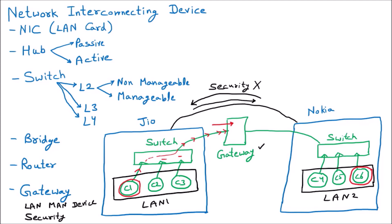So since the packets are coming from Jio, the gateway will allow them through. Then it will also work for the outgoing — because the data is coming inside the Nokia company. If it were some other banned company, it would not send, but since it is going to the correct company, it sends. Similarly, gateway can work from LAN2 to LAN1 as well, if both security permissions are given. Afterward, it will send the packet to the switch, and the switch will further send it to the specified computer.